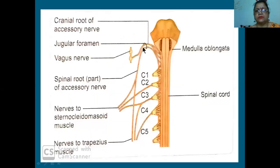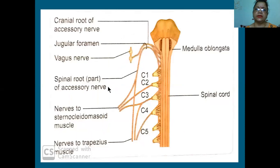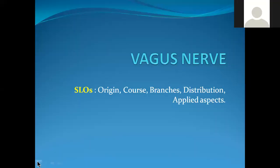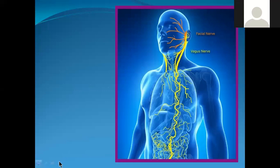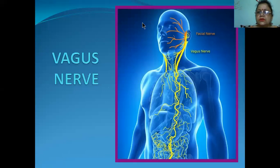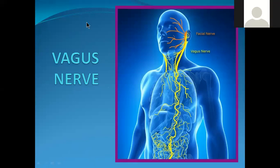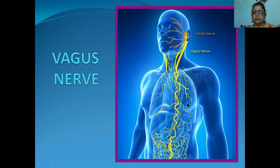Remember that the vagus comes out along with accessory and glossopharyngeal through the jugular foramen, where the internal jugular vein begins. It has two ganglia: superior ganglion at the level of the jugular foramen and inferior ganglion at the base of the skull outside. It comes out as about 10 rootlets. I hope this class has done justice to the topic.